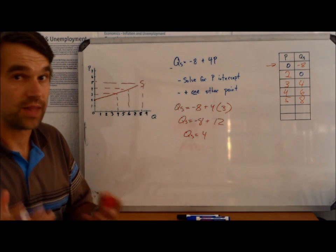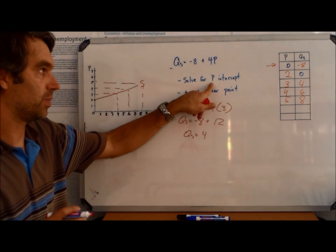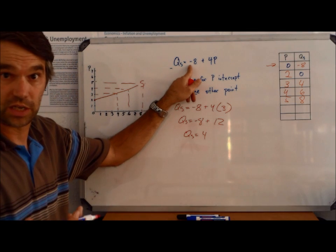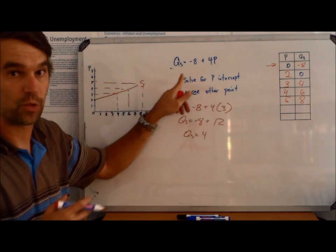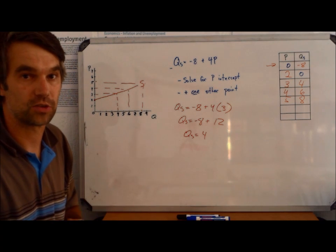That's it with supply functions. It's really not that difficult. Remember to solve for the P-intercept first. If this is 0 or positive, you don't even need to do that. You can just put that point on and then graph one other point. And that's going to be your supply curve.